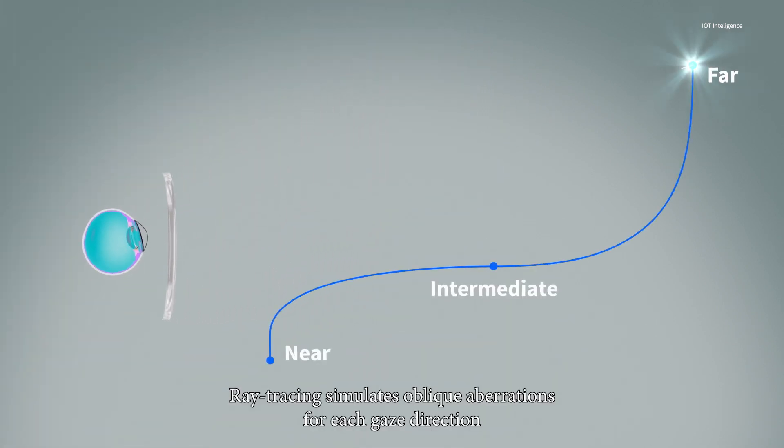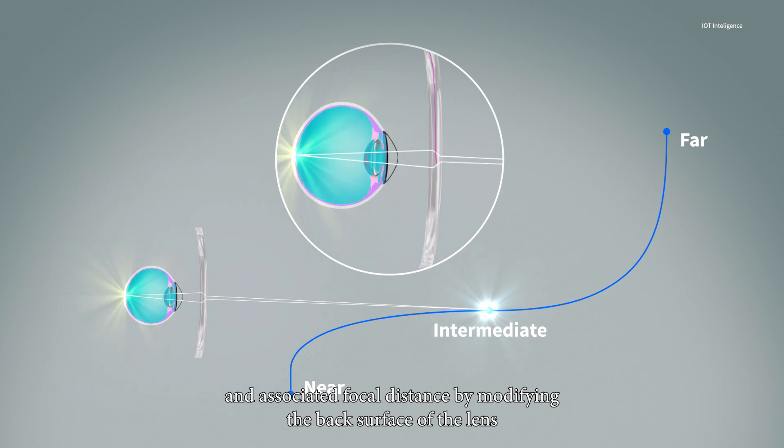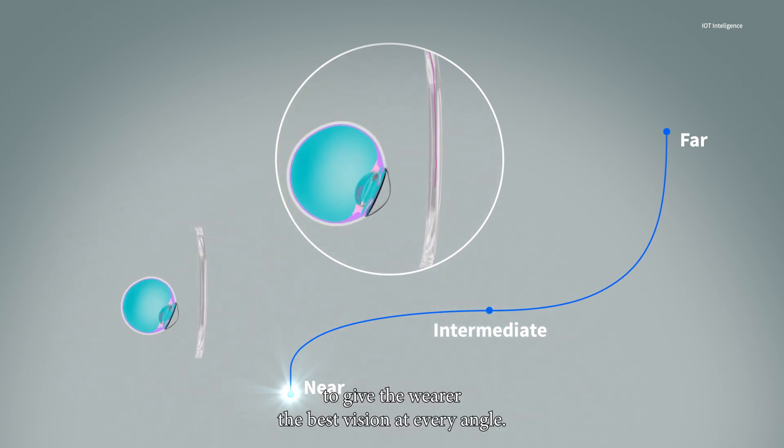Ray tracing simulates oblique aberrations for each gaze direction and associated focal distance by modifying the back surface of the lens to give the wearer the best vision at every angle.